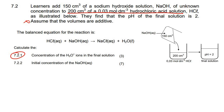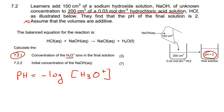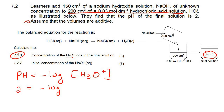The first question says: calculate the concentration of hydronium ions in the final solution. We know the formula: pH = −log[H3O+]. So if we know the pH, we can work out the concentration of H3O+, because the square brackets mean concentration. So we say 2 = −log[H3O+].